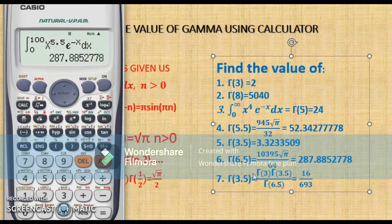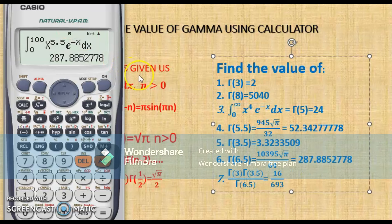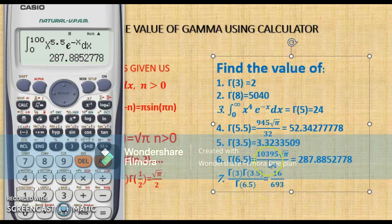So to summarize: for gamma of 3 we got 2 factorial equals 2; for gamma of 3.5 the result is 3.323350964; and for gamma of 6.5 the result is 287.885277. When you factor everything inside for gamma of 6.5, you get 15 over 16 times 93 root pi — the answer is shown on screen. We were also able to calculate gamma of 3 as 2 factorial equals 2.